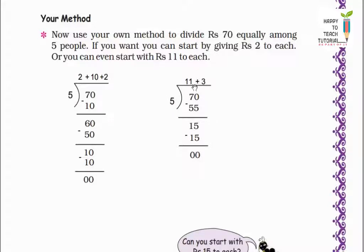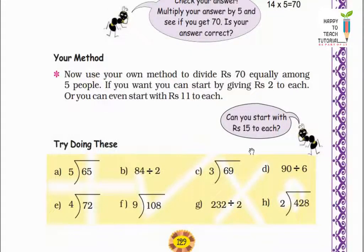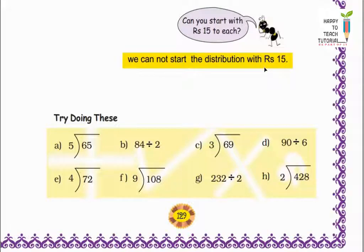Here you can see I start by giving rupees 11 among 5 people. So 5 into 11 equals 55. 70 minus 55 leaves 15 rupees. So now I am left with 15 rupees still to distribute. That means I give rupees 3 more among 5 people. 5 into 3 equals 15. Now nothing is left — I have distributed all the money equally. Can you start with rupees 15 to each? No, we cannot start the distribution with 15 rupees.